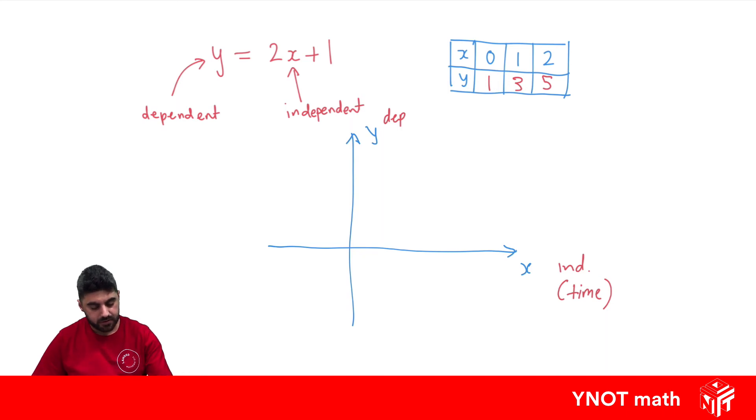And then, now we can plot out our values on our independent and dependent axis. 1, 2, 3. 1, 2, 3, 4, 5. We can plot our points out.